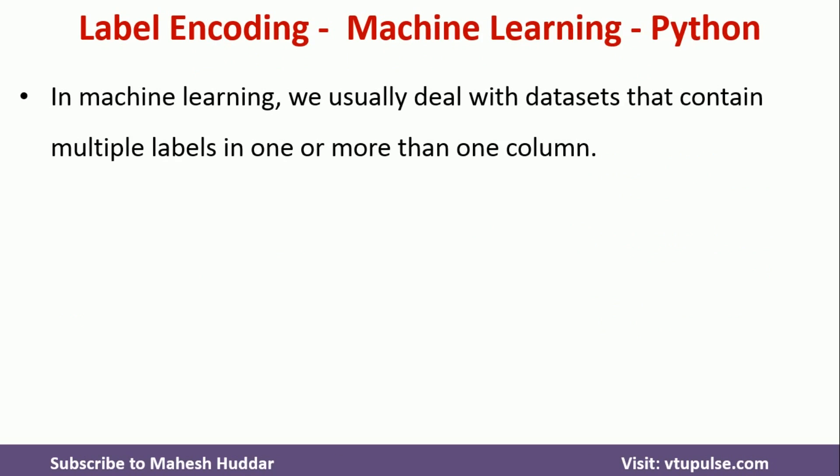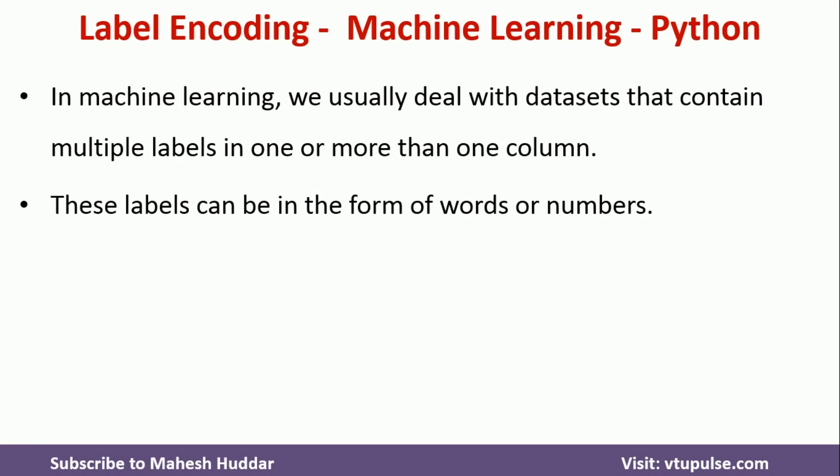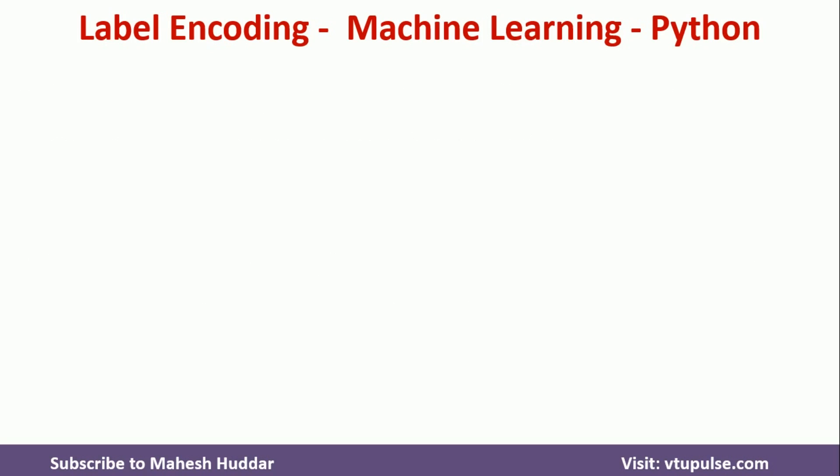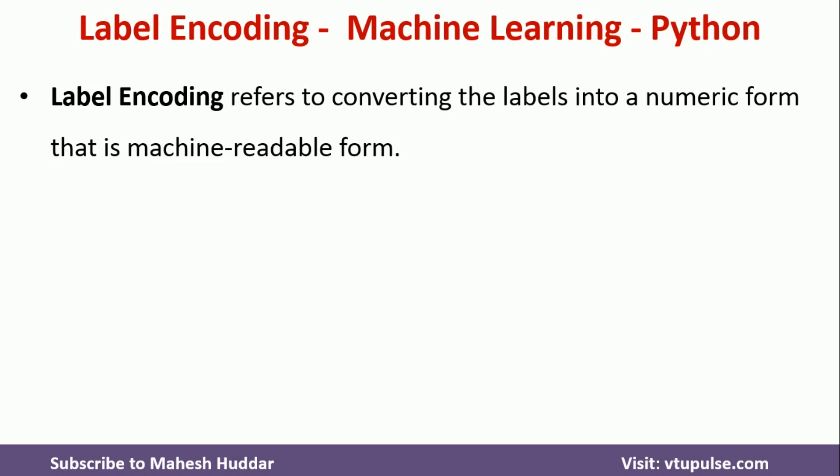Whenever we get datasets in machine learning, usually one or more columns may contain multiple labels. The labels may be in the form of words or numbers. Usually the labels will be written in the form of words so the dataset can be easily understandable. But whenever we want to give the dataset as input to machine learning, we cannot give it directly because machine learning libraries expect the data to be in numeric form.